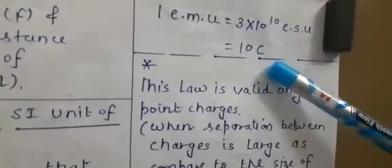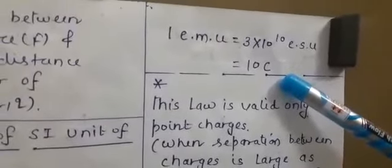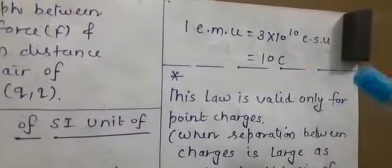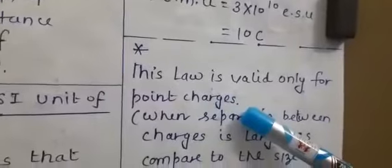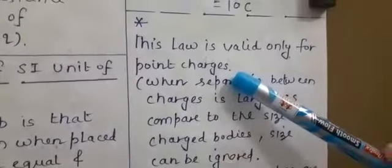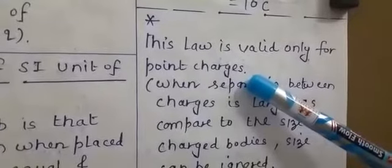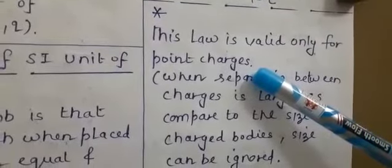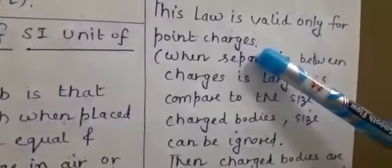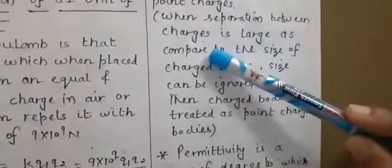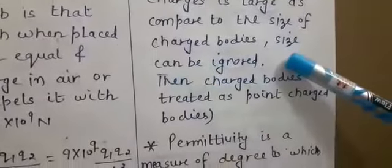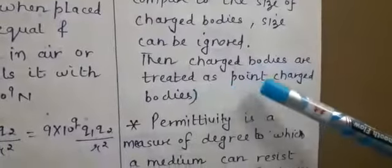We have discussed some basic concepts about Coulomb's law. A few important points to remember: this law is valid only for point charges. There is actually no concept of a true point charge, but just as you studied point mass in class 11 — where the mass was compared with the distance covered — here the size of the charged body is compared with the separation between charges. When separation is much larger than the size of the charged body, the body is treated as a point charge.